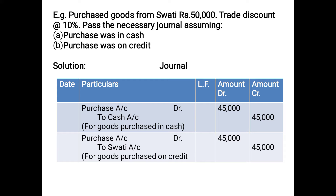Moving ahead with practical examples. Trade discount can be given at the time of cash or credit purchases or sales. Here, goods have been purchased from Swati for Rs. 50,000 with trade discount at 10%. So 10% of 50,000 is 5,000 — that means trade discount is Rs. 5,000. The net purchase value is 50,000 minus 5,000, which equals Rs. 45,000. Since it is a trade discount, it will not be shown separately.